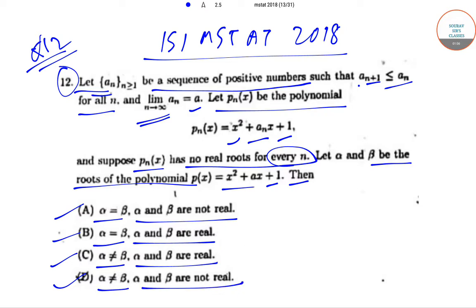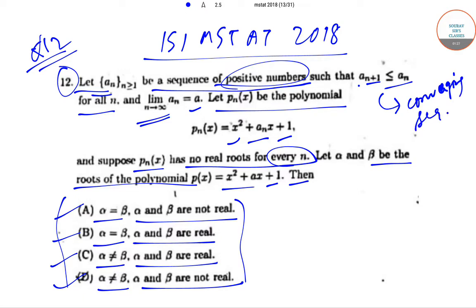What we've been given is: a_n is a sequence of positive numbers, and a_{n+1} is less than or equal to a_n, so this is a converging sequence. Also, the limit of a_n as n tends to infinity is equal to a. Since p_n(x) has no real roots, the discriminant of p_n(x), which equals a_n² minus 4, must be less than zero.